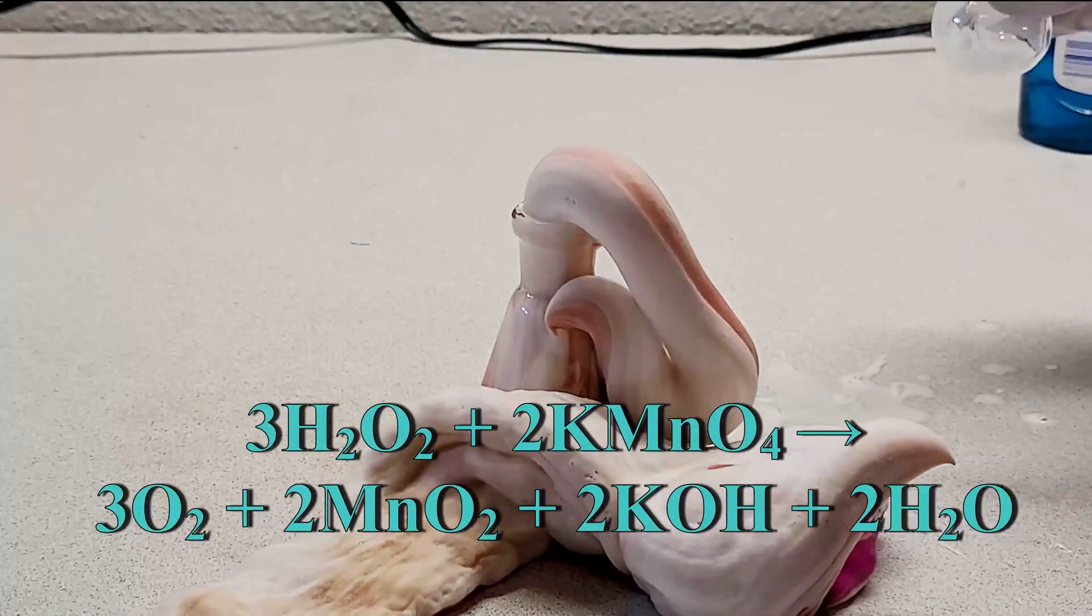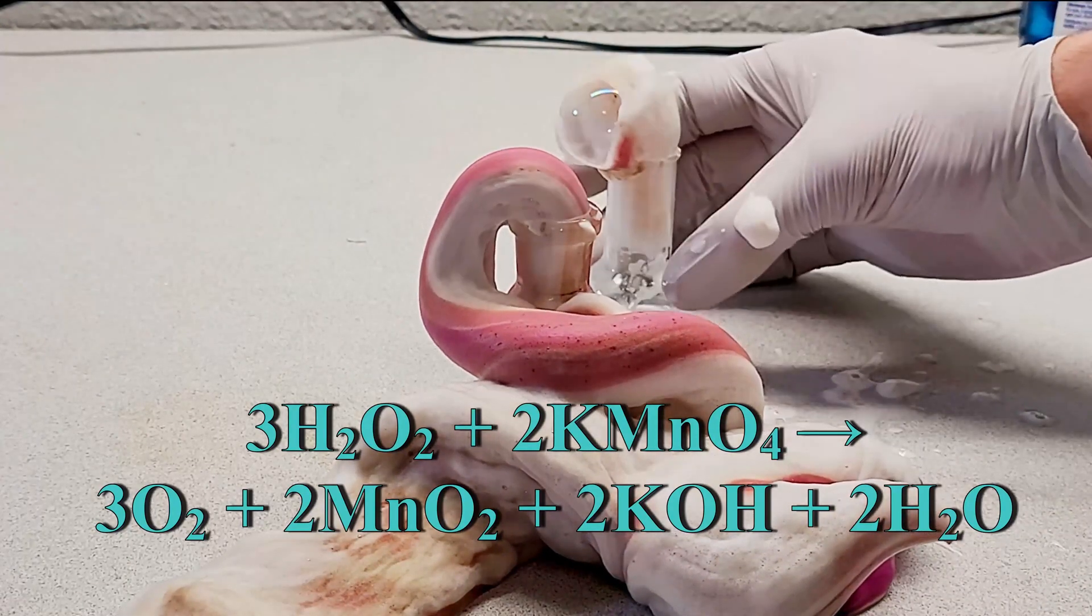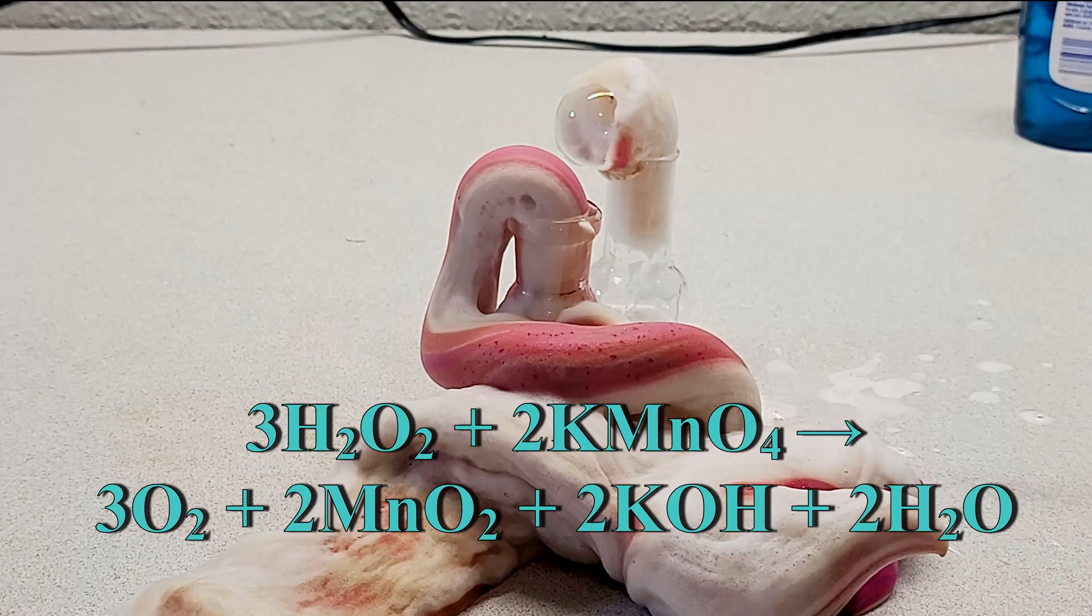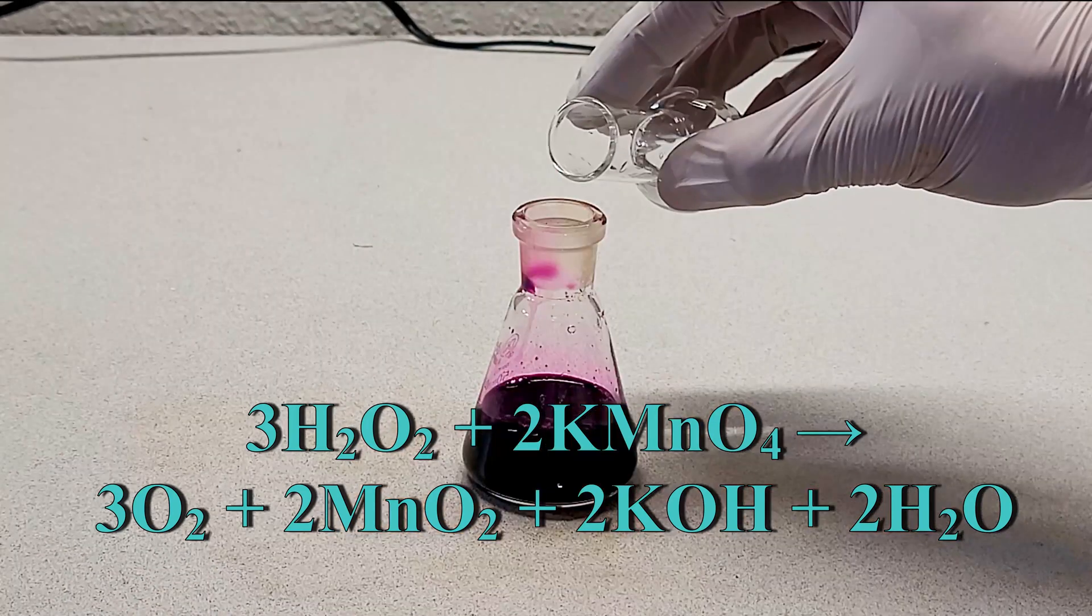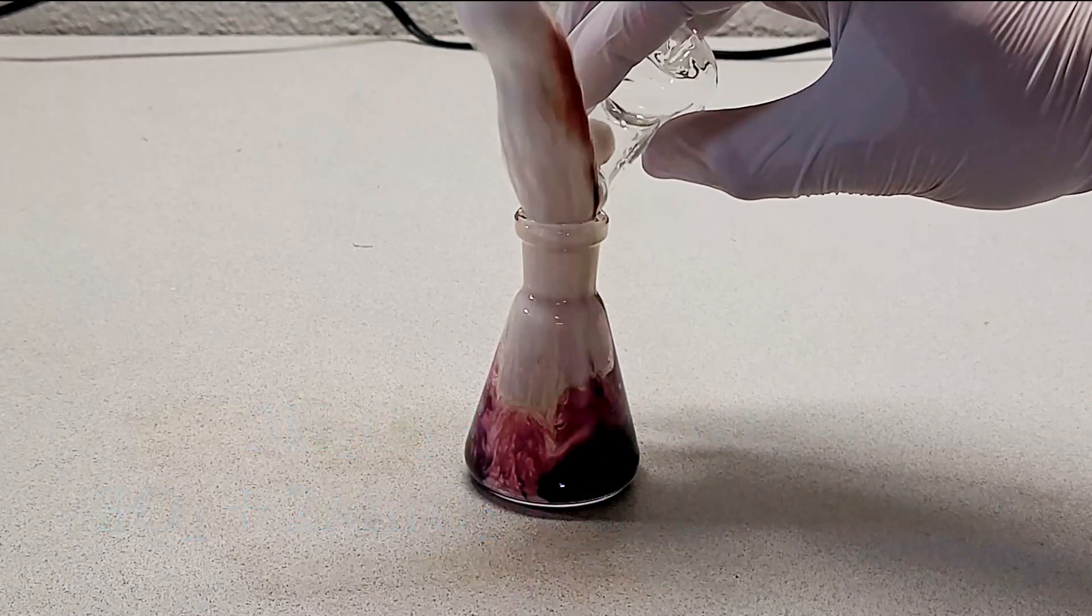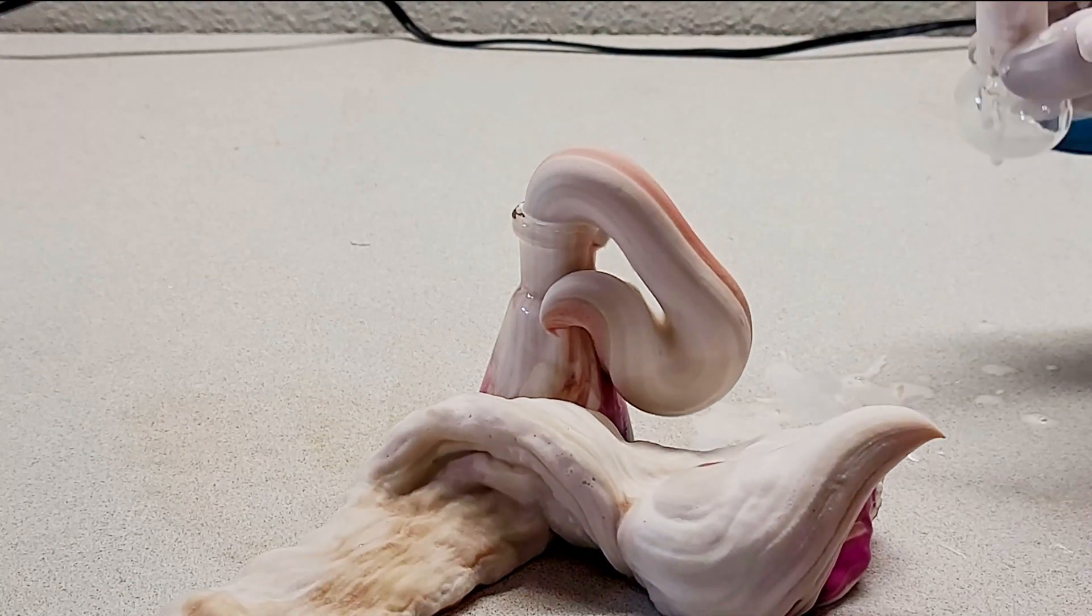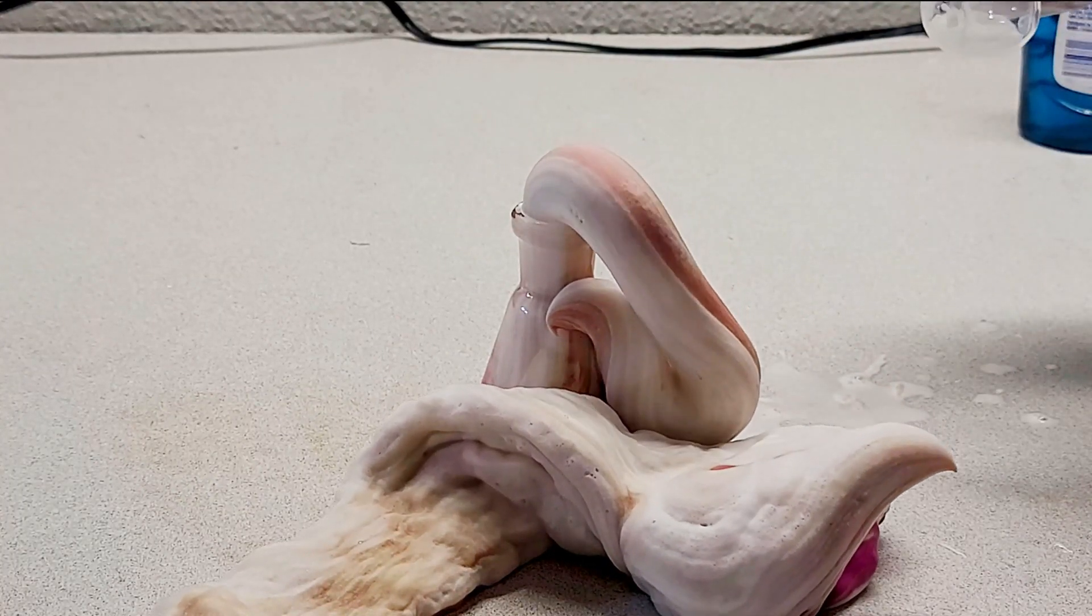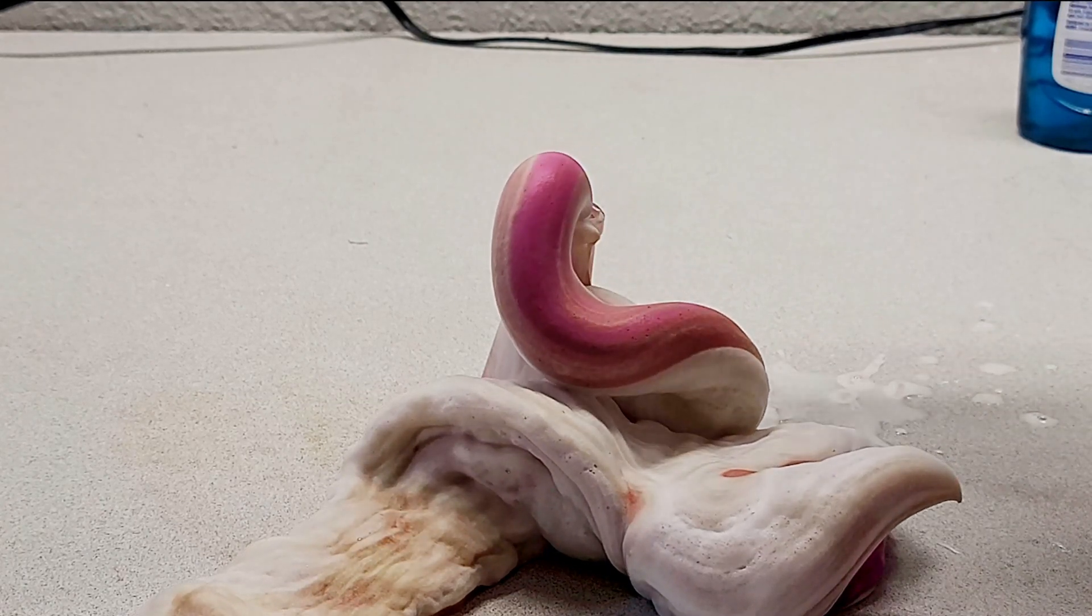And when the hydrogen peroxide and the potassium permanganate react, they'll form manganese dioxide, potassium hydroxide, water, and oxygen. Now this reaction happens pretty rapidly and gives off a lot of heat. The rapid release of all that oxygen in the presence of the detergent that we added results in the large amount of foam and volcano-like reaction that we see here.